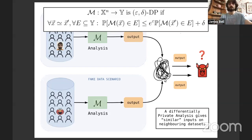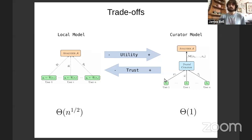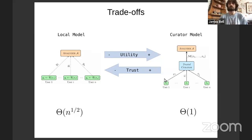There's another model called the local model. In the curator model we trust all of the database to a trusted curator who computes something and we merely ask that the output be private. In the local model, we instead ask each person to randomize their data locally so that it's already differentially private before they send it into any centralized database. The local model is better because you don't have to trust anyone outside your own machine, but it's worse because for real-value summation with n users, you need to incur error at least square root n, whereas in the curator model we can get constant error.